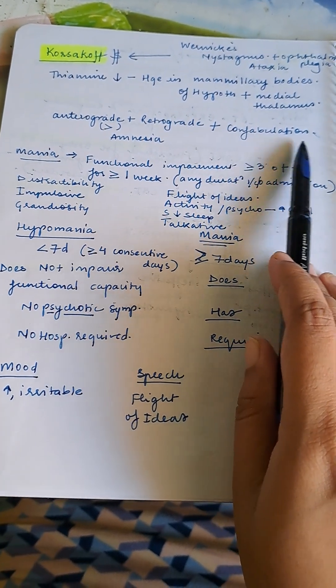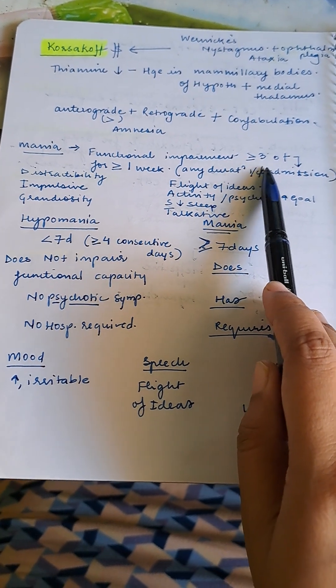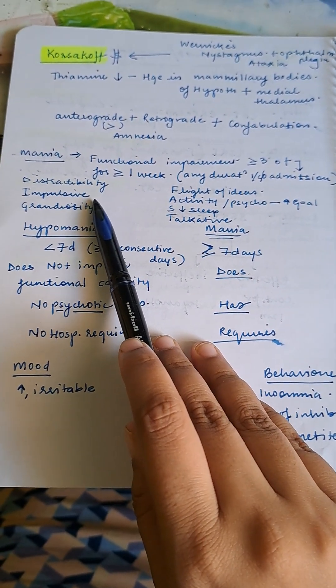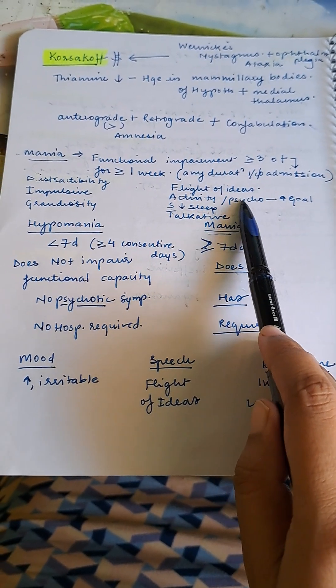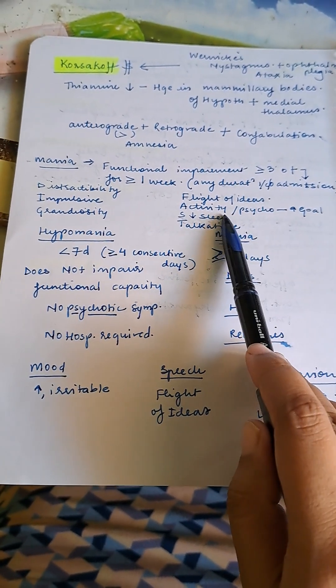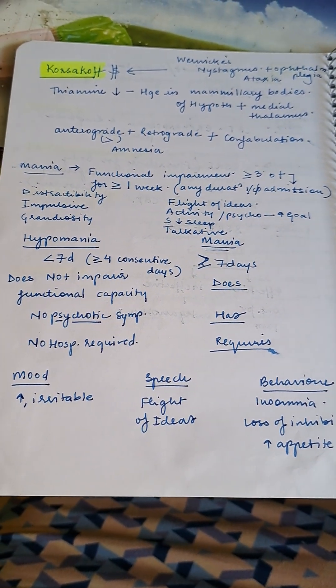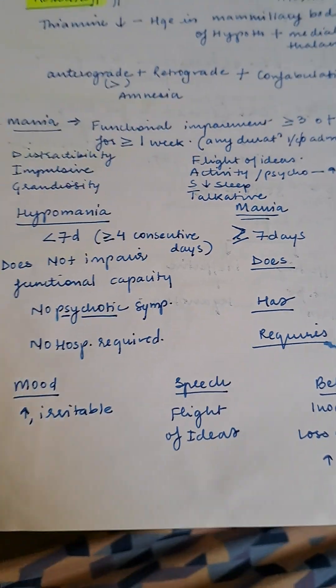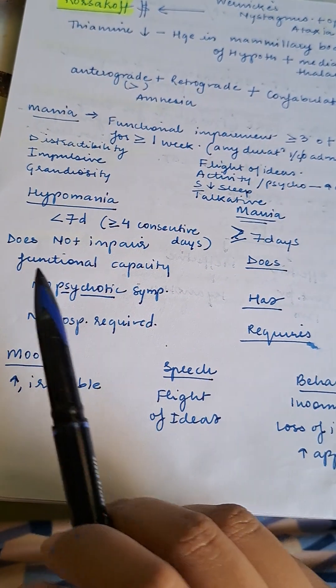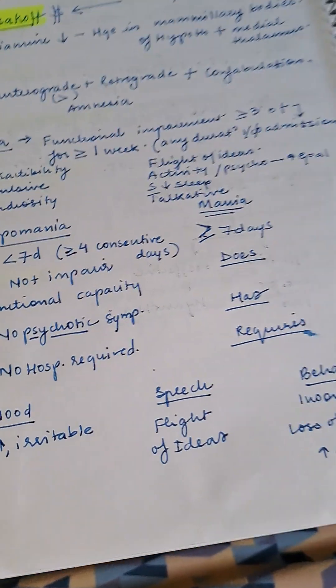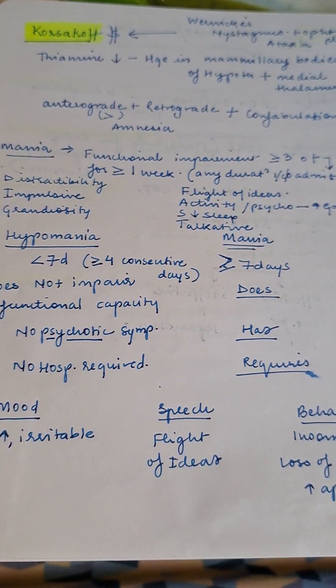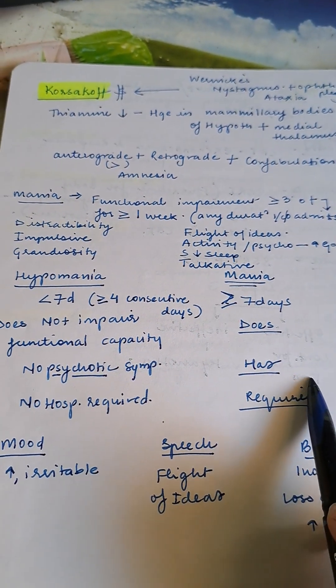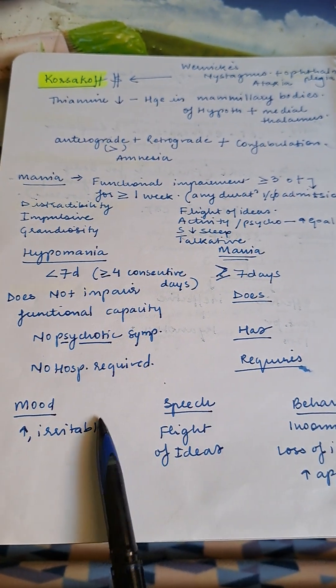Mania: functional impairment of more than or equal to three of the following for any duration if admitted, or more than one week. Symptoms: distractibility, impulsivity, grandiosity, flight of ideas, increased activity or psychosis, decreased sleep, talkativeness. Hypomania is usually less than seven days and more than or equal to four consecutive days. Does not impair function, no psychotic symptoms, no hospital required. Mania is more than or equal to seven days, impairs function, has psychotic symptoms, requires hospitalization.